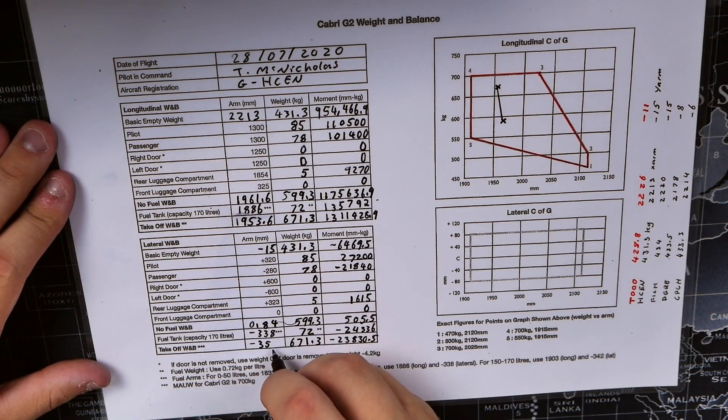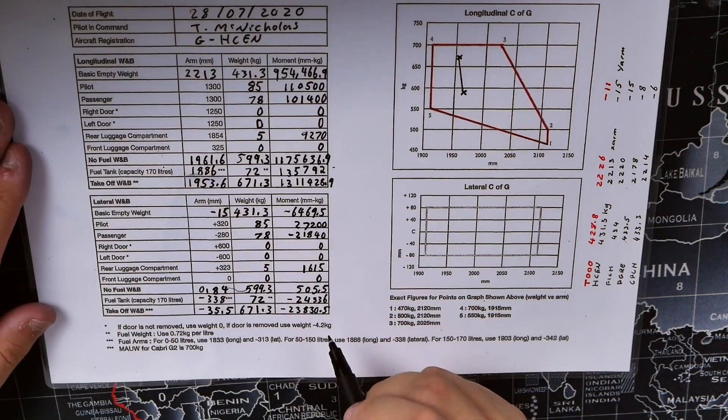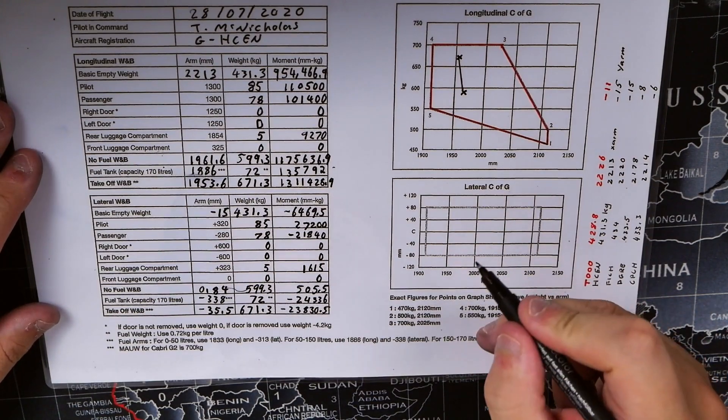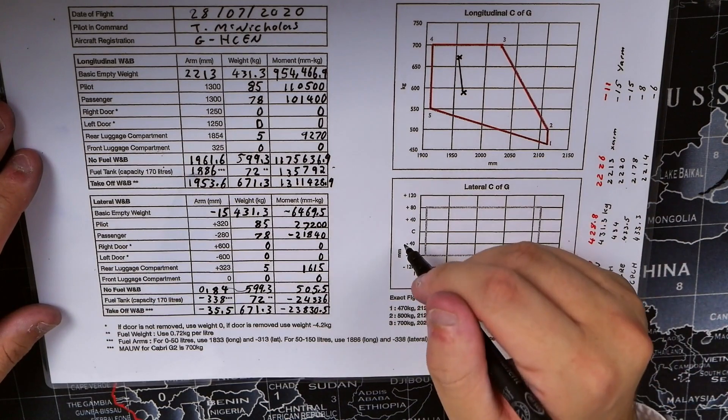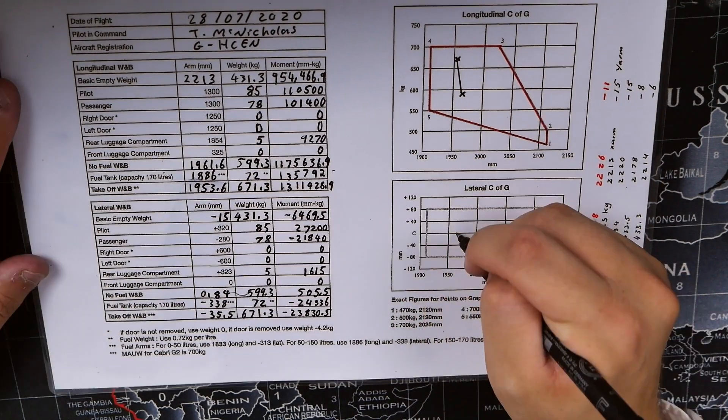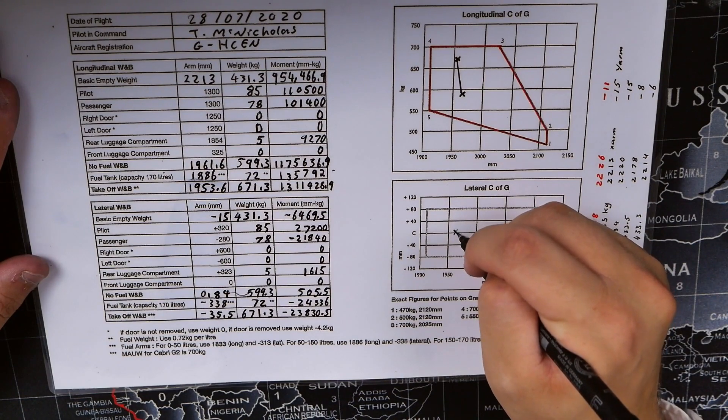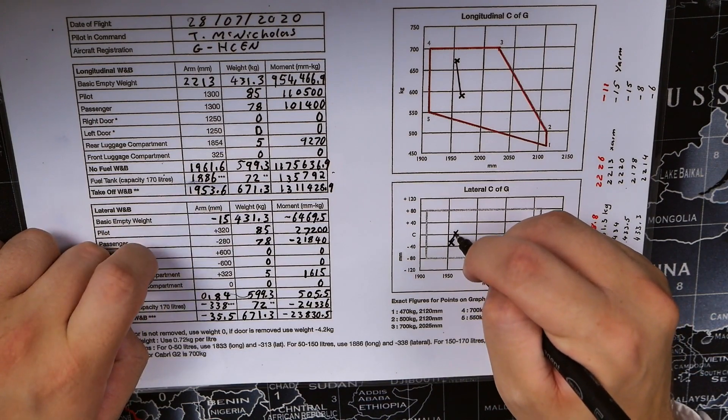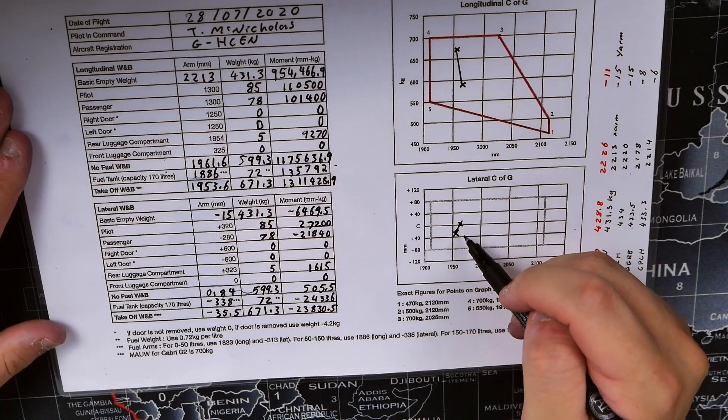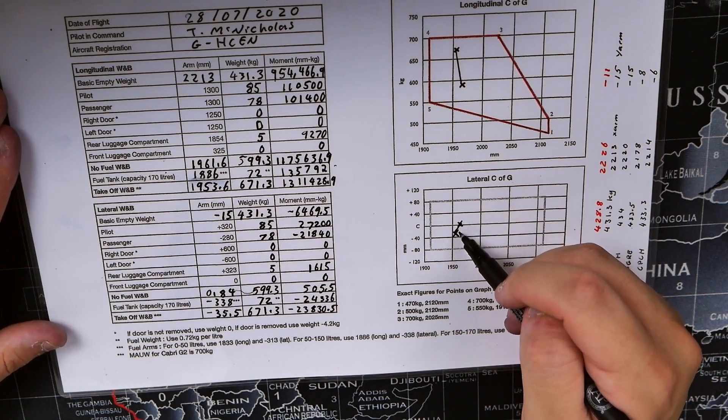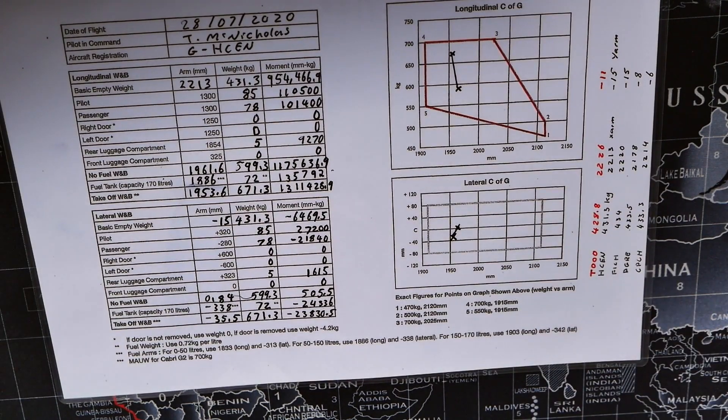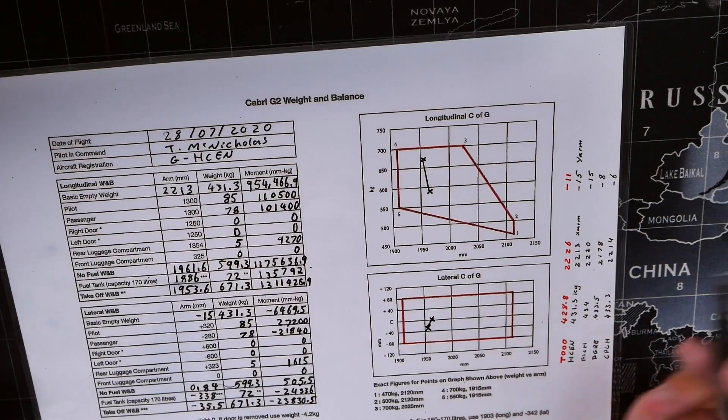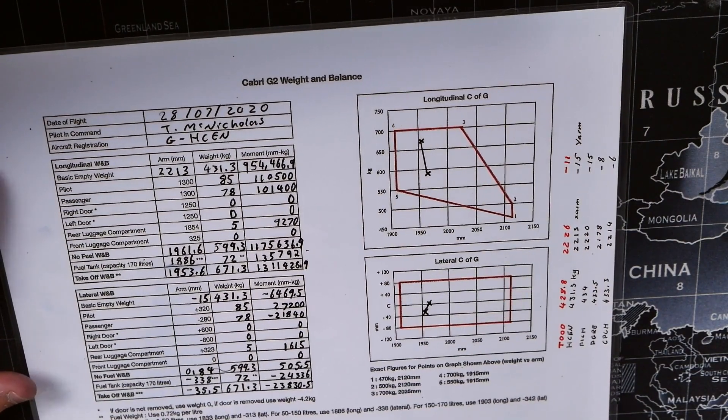Now we've got to put these values into the lateral C of G box, and this doesn't ask for weight anymore—this is a mixture of the lateral and longitudinal arms. We put an X roughly there and then put our X roughly in the box there. We put a line between the two, and we know that as the fuel burns, the weight shifts between those two Xs. If I just color in the limiting lines again, you can clearly see that both those Xs lie well within the limits, so as the fuel burns in flight we stay within the limits.